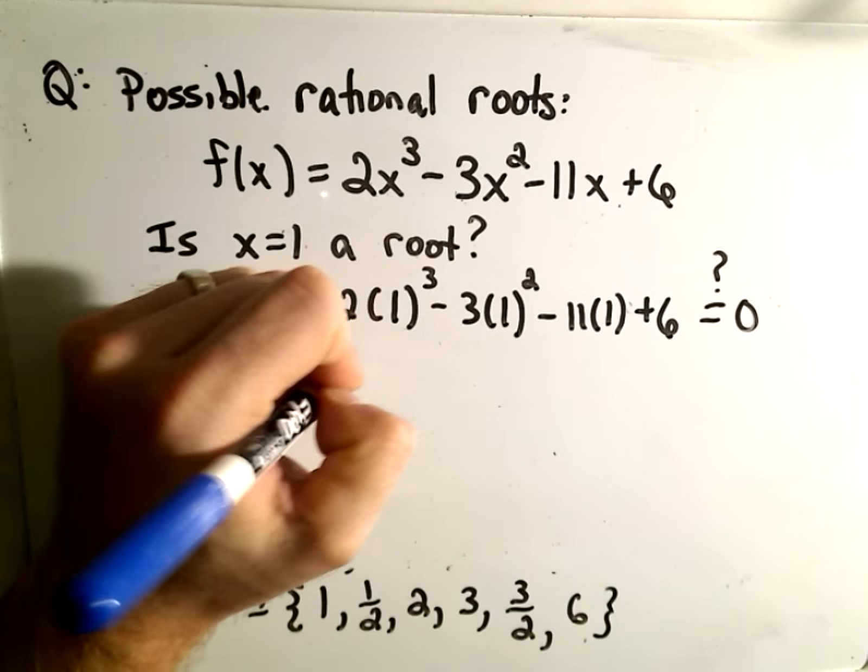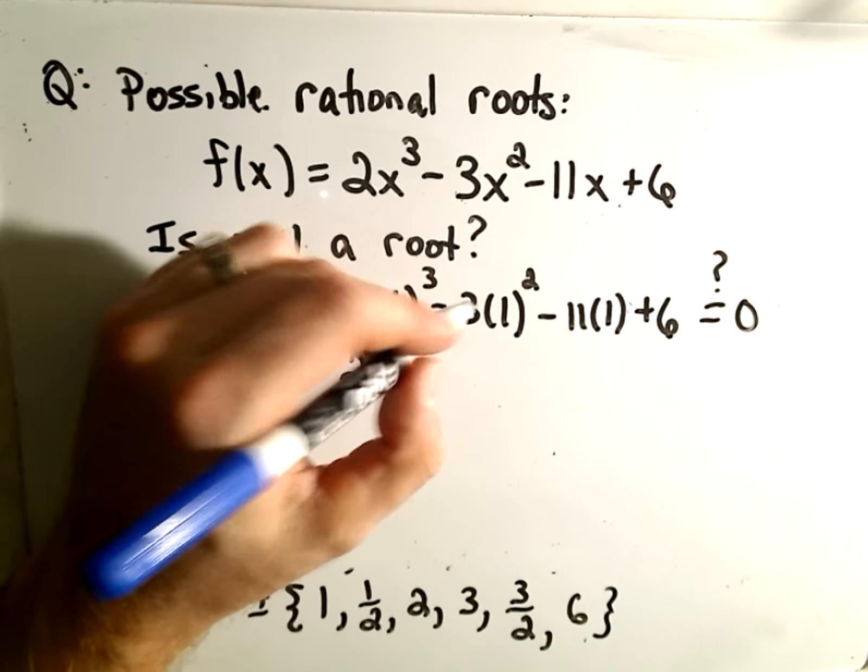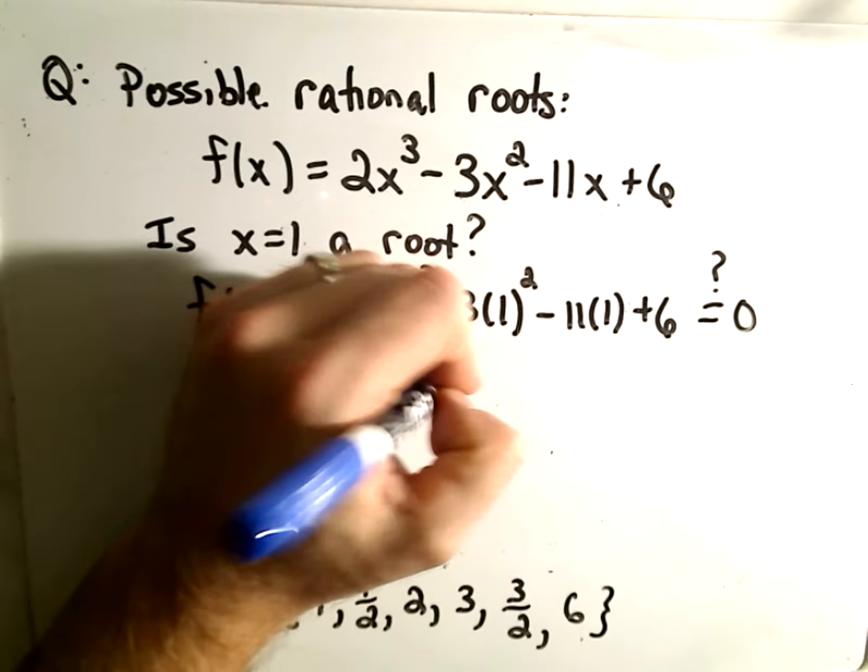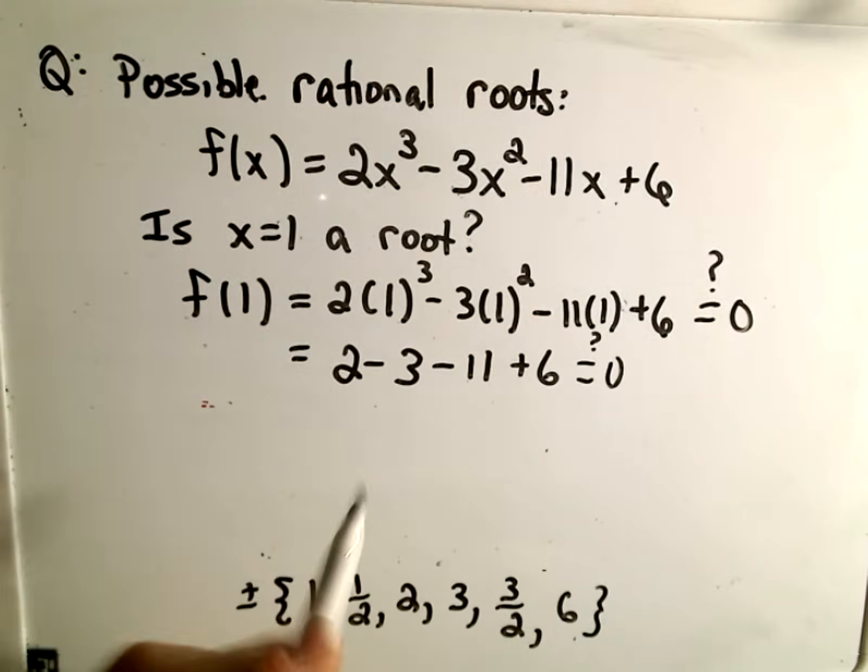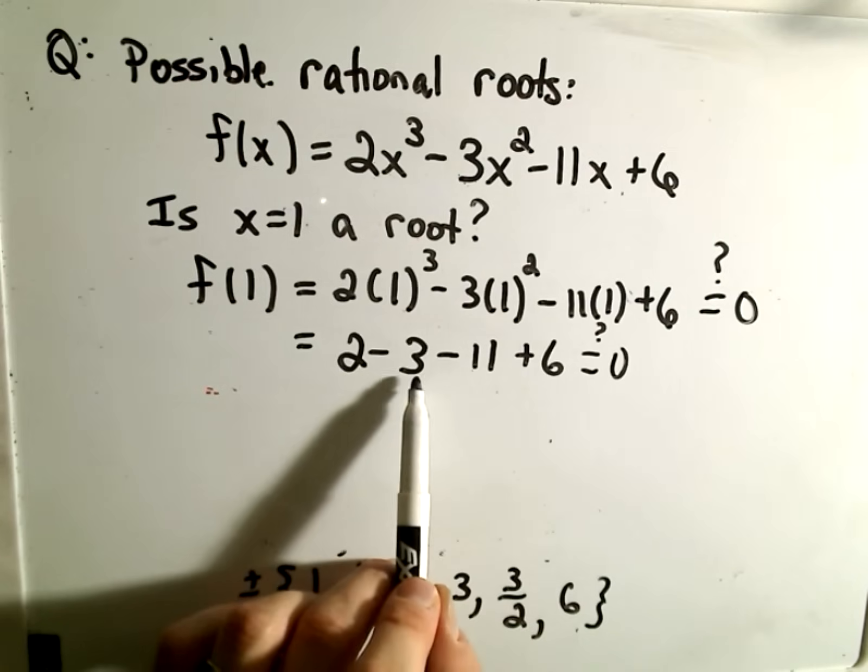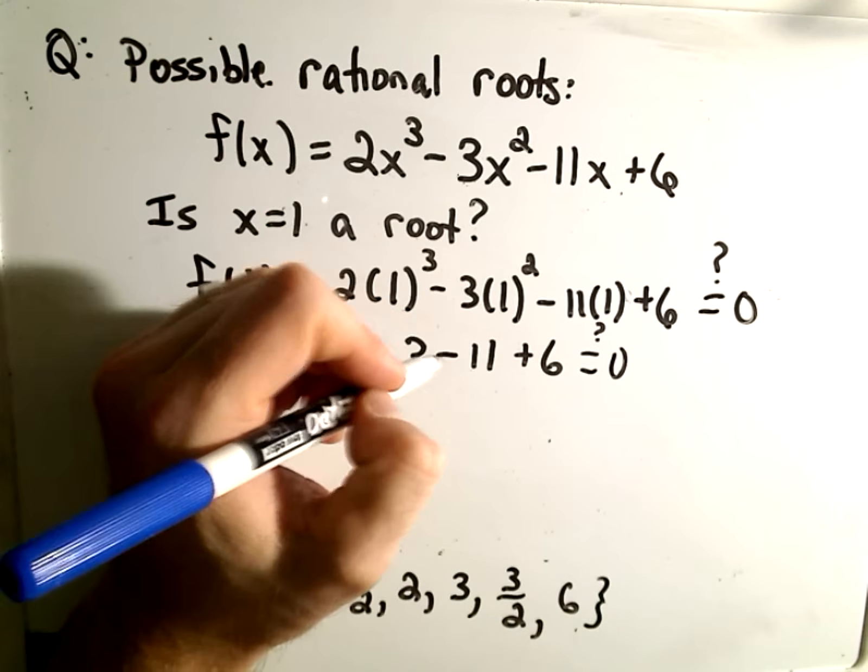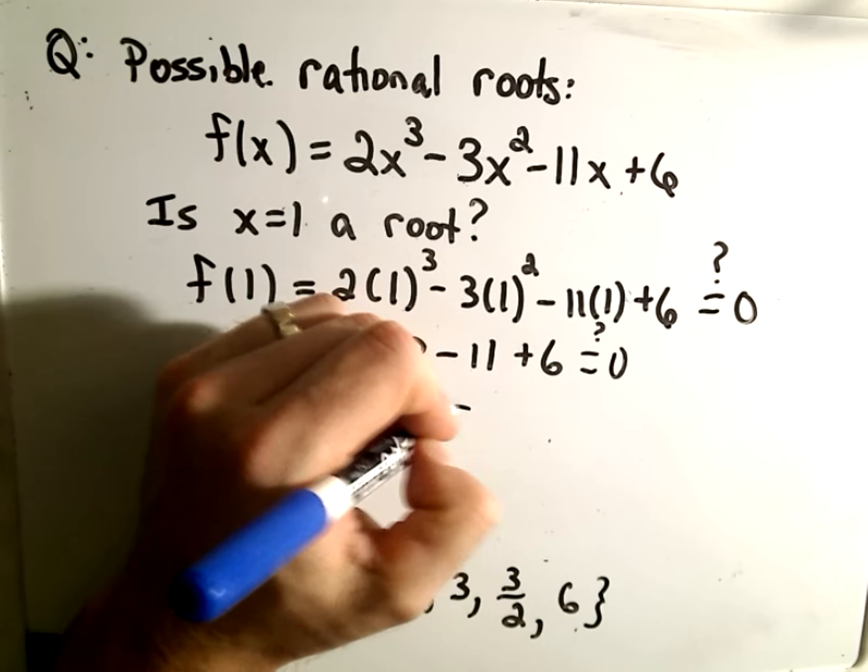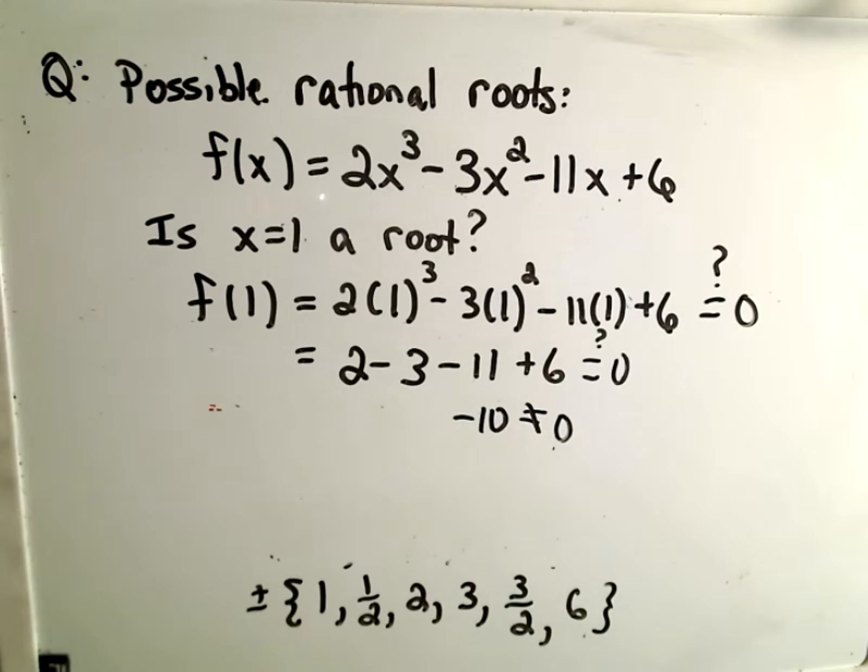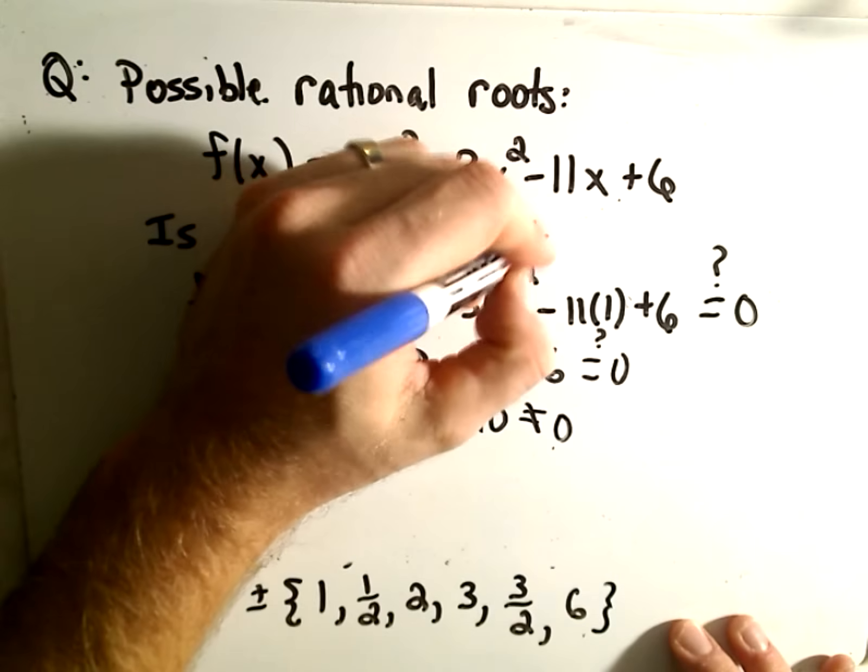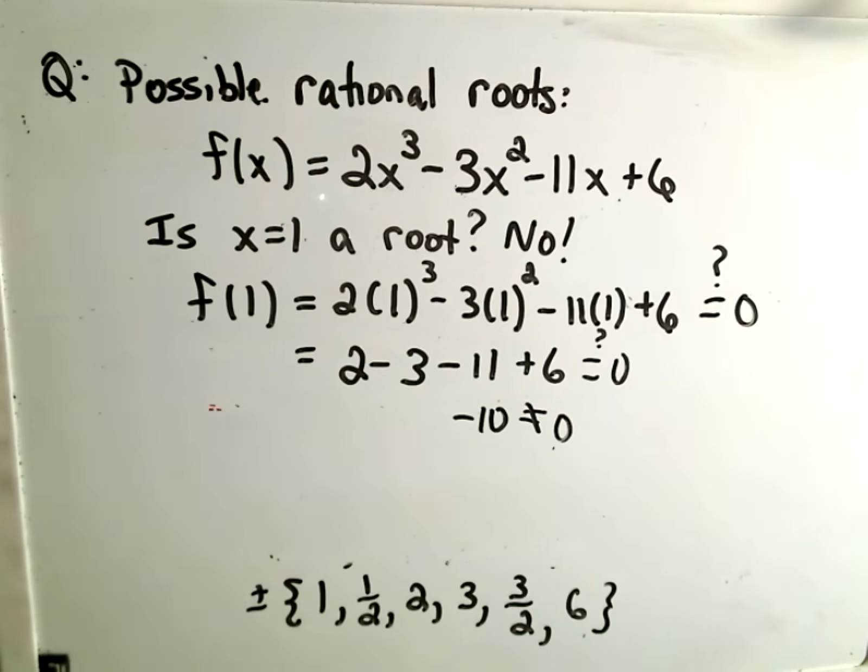All we have to do is simplify this down. 1³ is 1 times 2 is 2, 1² is 1 times 3 is 3, so 2 - 3 - 11 + 6. We get -5 - 11 which is -16, plus 6 is -10. That certainly doesn't equal 0, which means no, x = 1 is not a root.